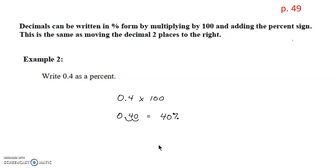It's important to note that any time we have 0-point-something, that's going to be less than 100%. So 0.4, 0.625, and 0.05 are all percentages less than 100. But we can also deal with percentages more than 100. For example, if we have 2.5, we can use the same method — multiply by 100, or move the decimal two places to the right — giving us 250%.